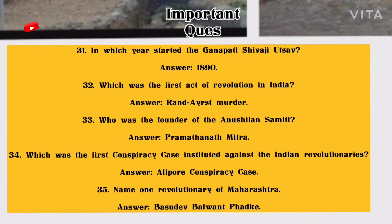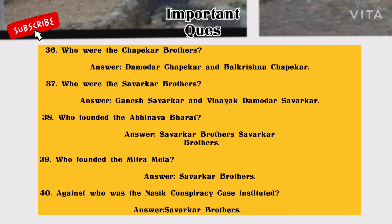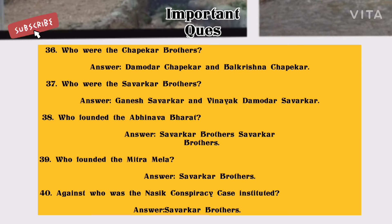Number 35: Name one revolutionary of Maharashtra. Answer: Vasudev Balwant Phadke. Number 36: Who were the Chapekar brothers? Answer: Damodar Chapekar and Balkrishna Chapekar. Number 37: Who were the Savarkar brothers? Answer: Ganesh Savarkar and Vinayak Damodar Savarkar. Number 38: Who founded Abhinav Bharat? Answer: Savarkar brothers.